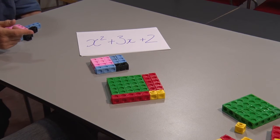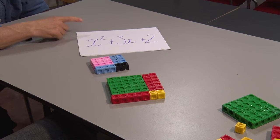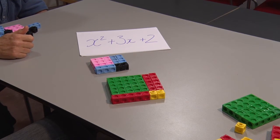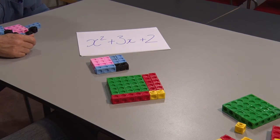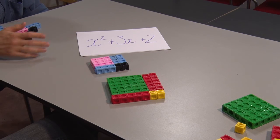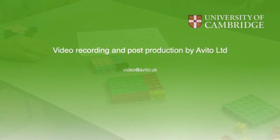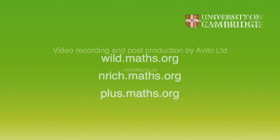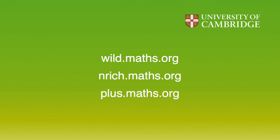So can we arrange an x squared, three x and two units to make a similar rectangle in any base? Alright, let me do this.